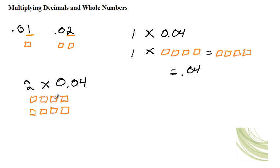So how many orange boxes do we have? One, two, three, four, five, six, seven, eight. So two times four one-hundredths will actually get us eight one-hundredths.